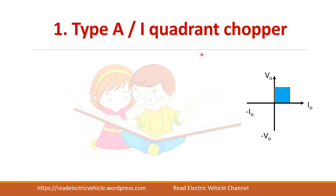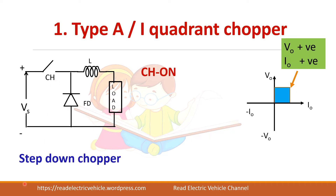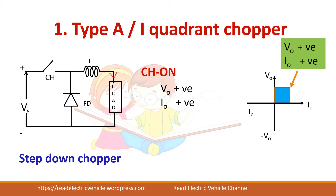The first one is the Type A or first quadrant chopper. In the first quadrant, both voltage and current should be positive. This is the circuit we have seen earlier — it is basically a step-down chopper which gives a positive voltage and positive current at the output. When the switch is on, current flows through this path, so load voltage is positive and the current through the load is also in the positive direction.